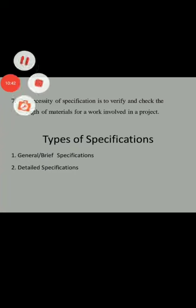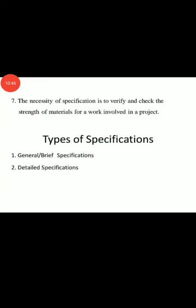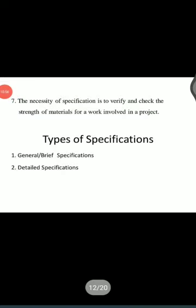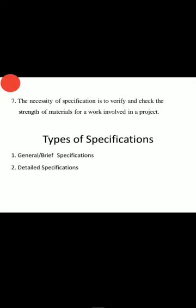It is very important to understand which type of specification you are using and where. Basically there are two major types: one is general or brief specification, and the second is detailed specification. General or brief specification gives only a brief description of each and every item of a particular work, whereas the detailed specification details the quality, quantity, proportion, and execution of work.